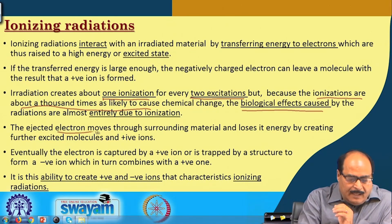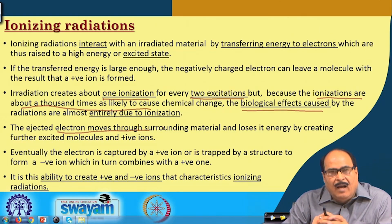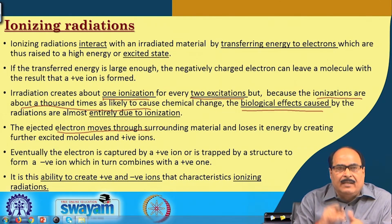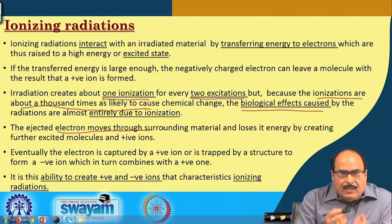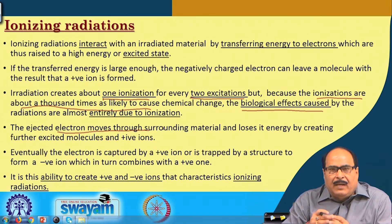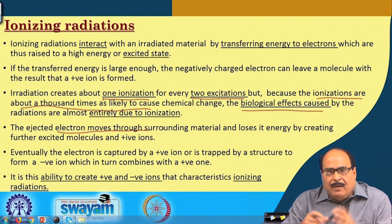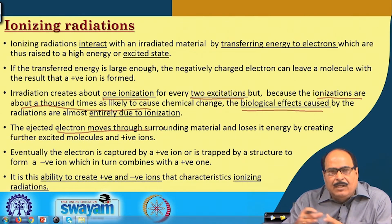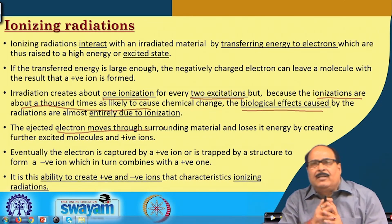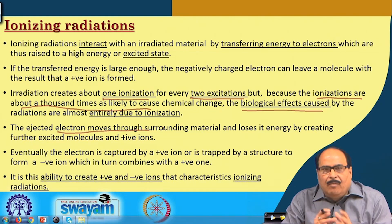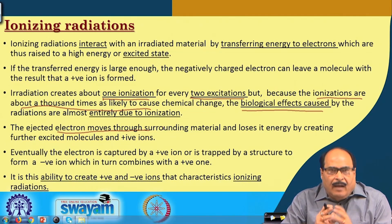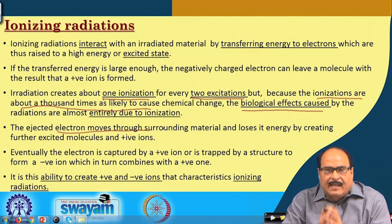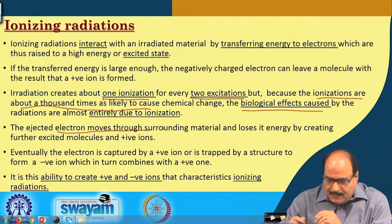The ejected electron moves through surrounding materials and loses its energy by creating further excited states and positive ions. Eventually, the electron is captured by a positive ion and trapped by a structure to form a negative ion, which in turn combines with a positive ion. This ability of ionizing radiations to create positive and negative ions is its characteristic, and it is used for beneficial purposes in food processing operations.